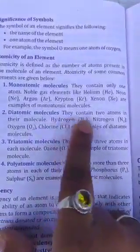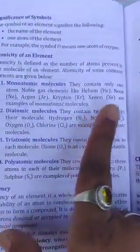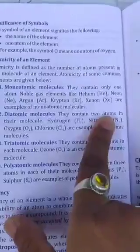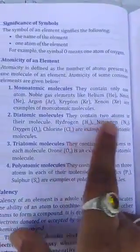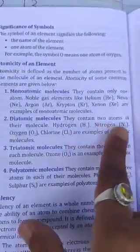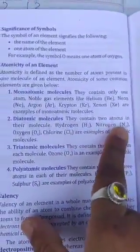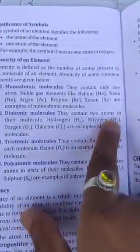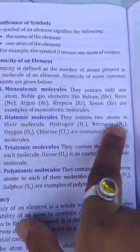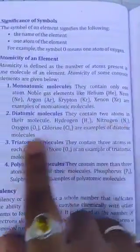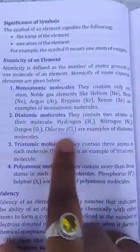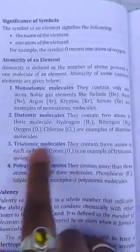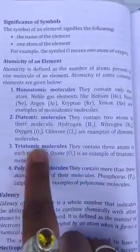Next, diatomic molecules — they contain two atoms in their molecule. For example, hydrogen H2, nitrogen N2 — they contain two atoms in their molecule. Oxygen O2, chlorine — these are examples of diatomic molecules.